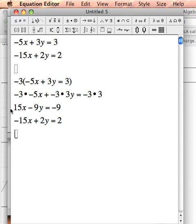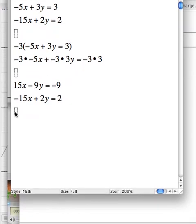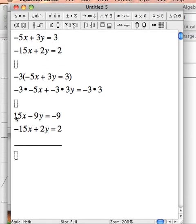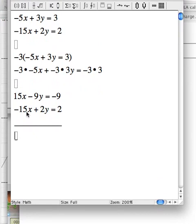See, now I can, now this is a situation where if I add, they'll cancel. So why don't I draw my calculating line? And negative 15x minus 15x is 0. So that worked out well for me.